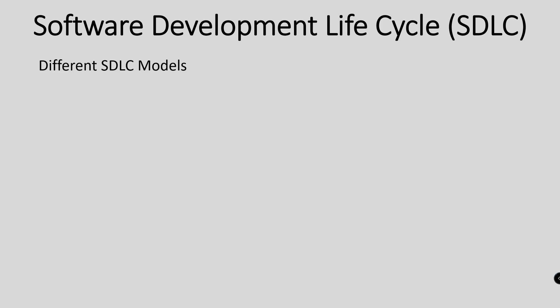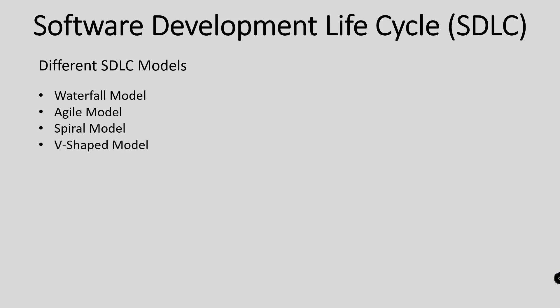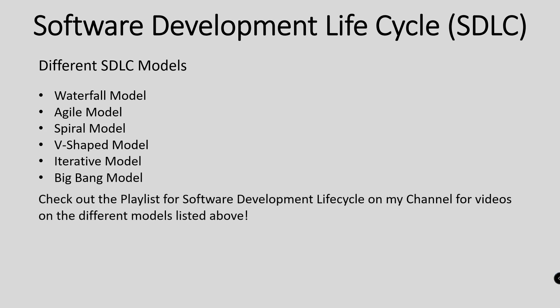In this video, we have discussed the basic idea of what the software development lifecycle looks like. Here is a list of the most popular software development lifecycle models that developers follow: the Waterfall model, Agile model, Spiral model, V-shaped model, Iterative model, and the Big Bang model. Check out the playlist for the software development lifecycle on my channel for videos on the different models listed above.